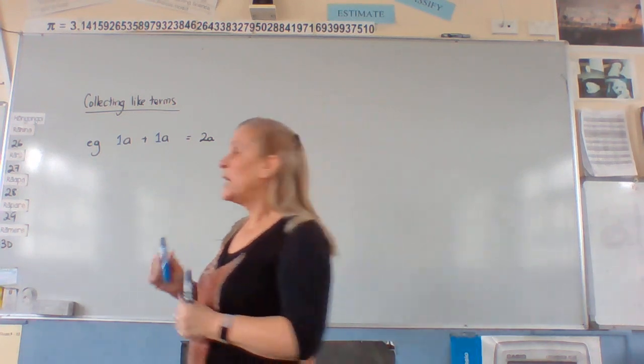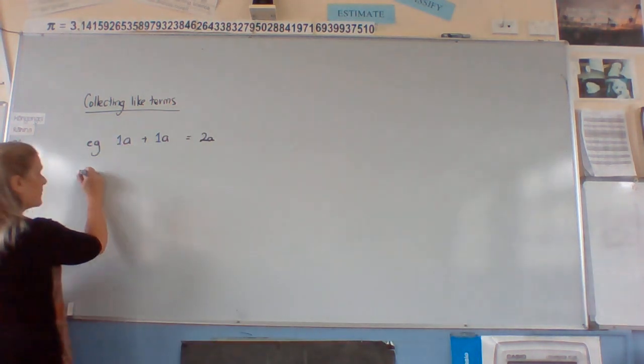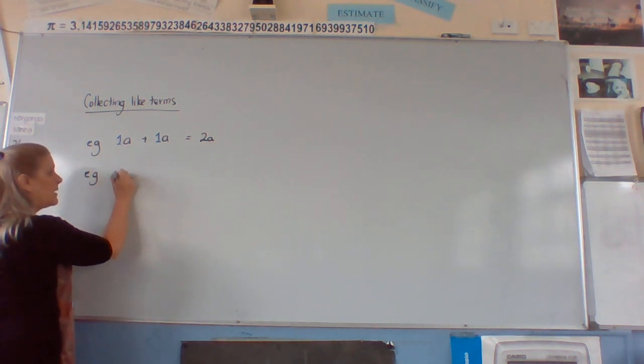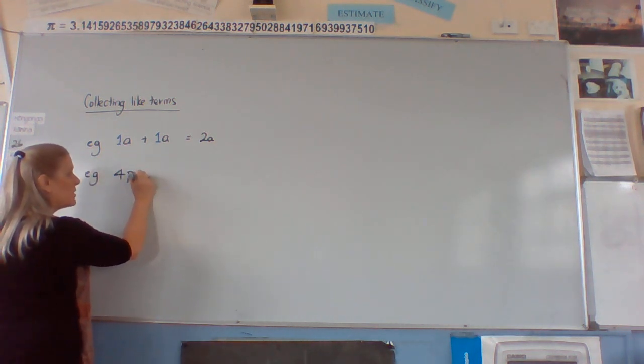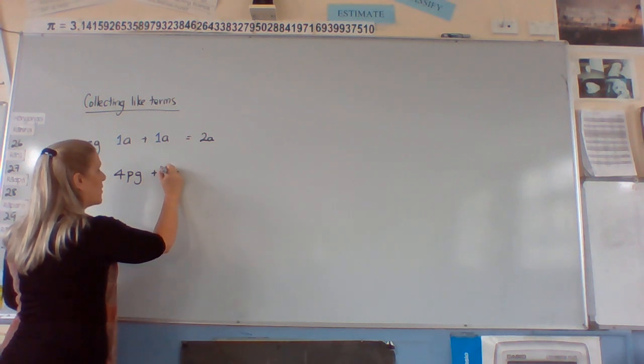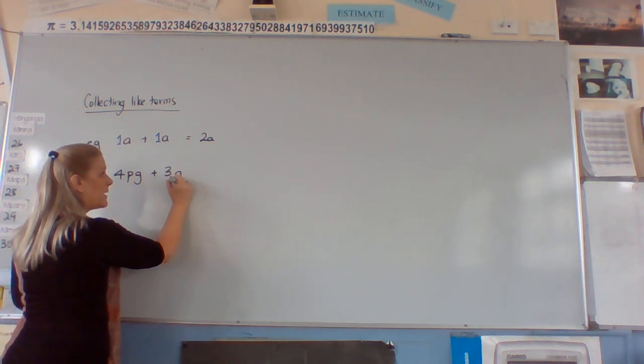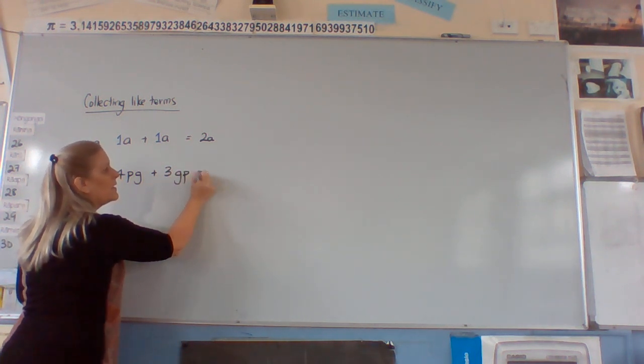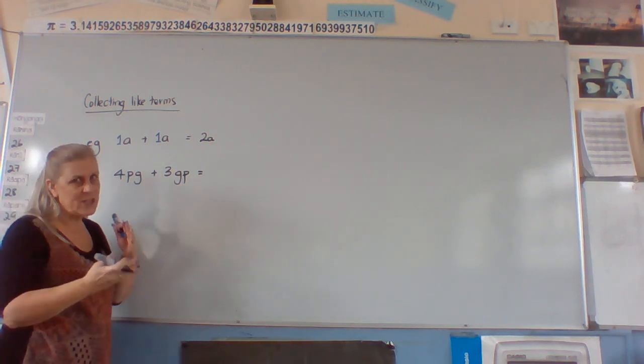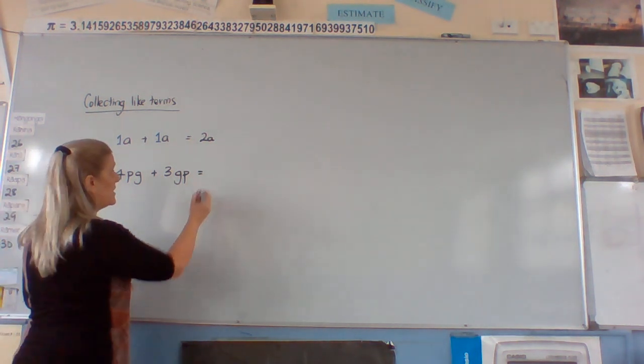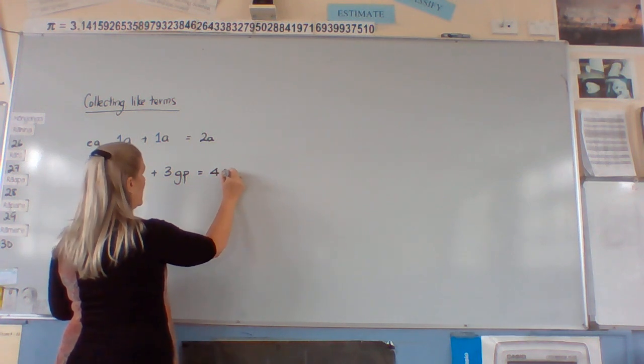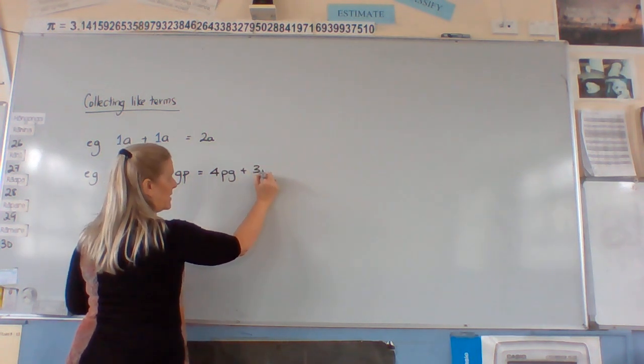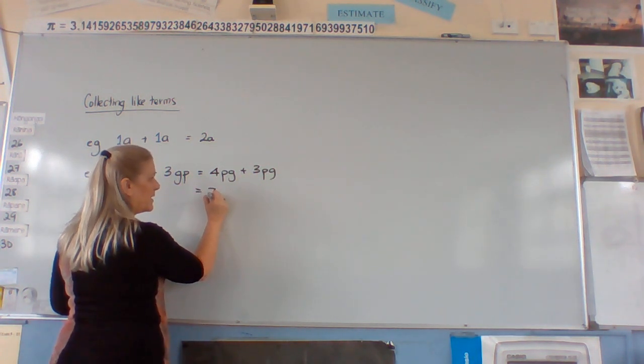So if we had 4 pretty girls plus 3 grumpy peanuts, then the grumpy peanuts and the pretty girls, they're actually just PG. So it's the same as saying 4PG plus 3PG. That makes 7PG.